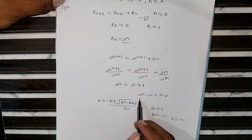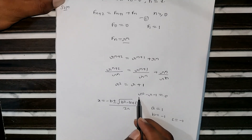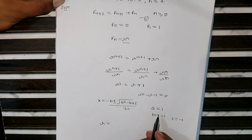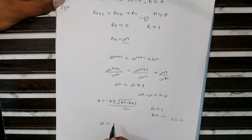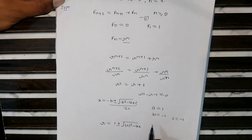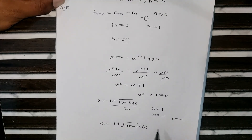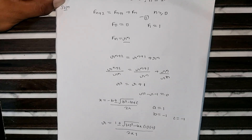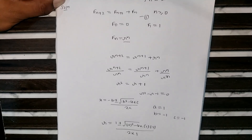Since the quadratic equation is in terms of r, change the formula accordingly. So r = (1 ± √((−1)² − 4·1·(−1))) / (2·1), which simplifies to r = (1 ± √5) / 2.